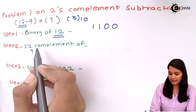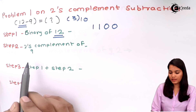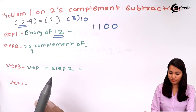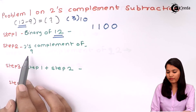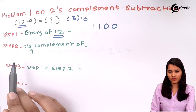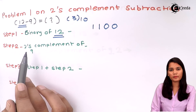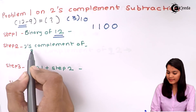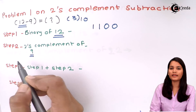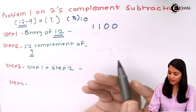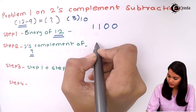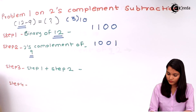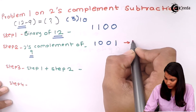Now the second step is to find the two's complement of 9. To find the two's complement of 9, we first convert 9 from decimal into binary. The binary of 9 is 1 0 0 1.